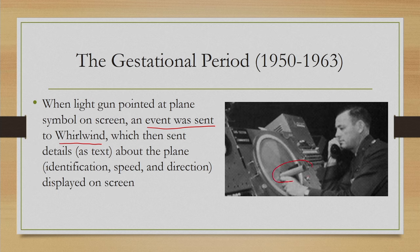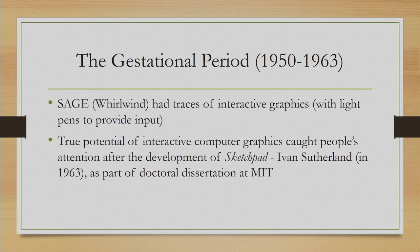The Whirlwind system sent back the details as text about the plane's identification information, which was then displayed on the operator's screen. The light gun operator pointed the pen on the screen where an aircraft symbol was shown, and once the pointing was done the system sent a message back with all the information. So the SAGE system had traces of interactive graphics where interaction was done with the help of the light gun or light pen, but it was still not fully interactive the way we understand interaction in the modern context.